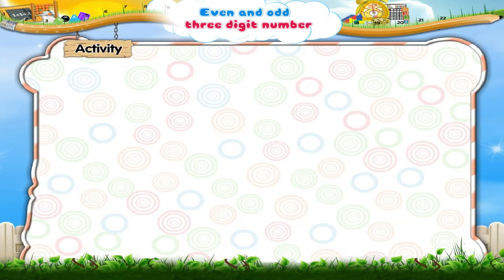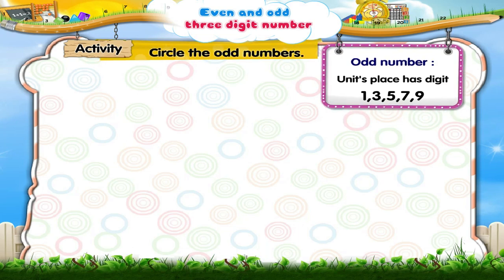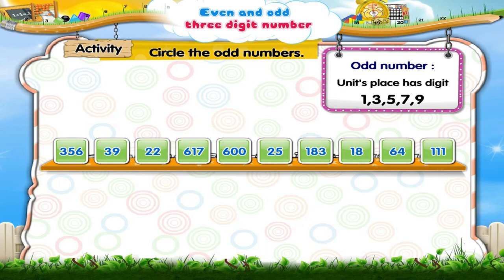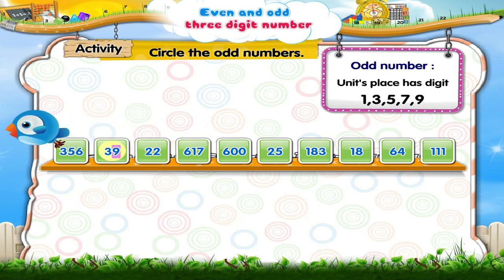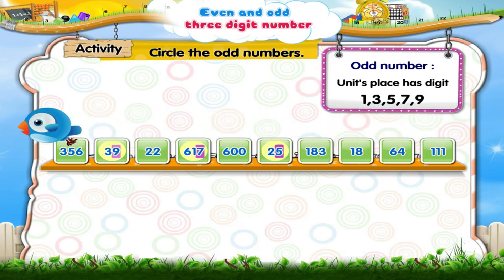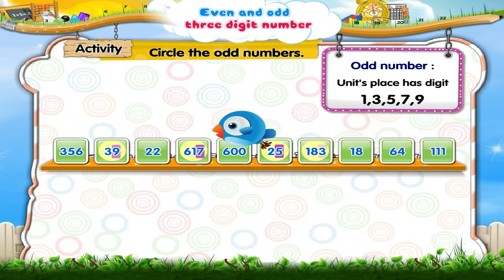Now, let us circle the odd numbers. The odd numbers are 39, 617, 25, 183, and 111.